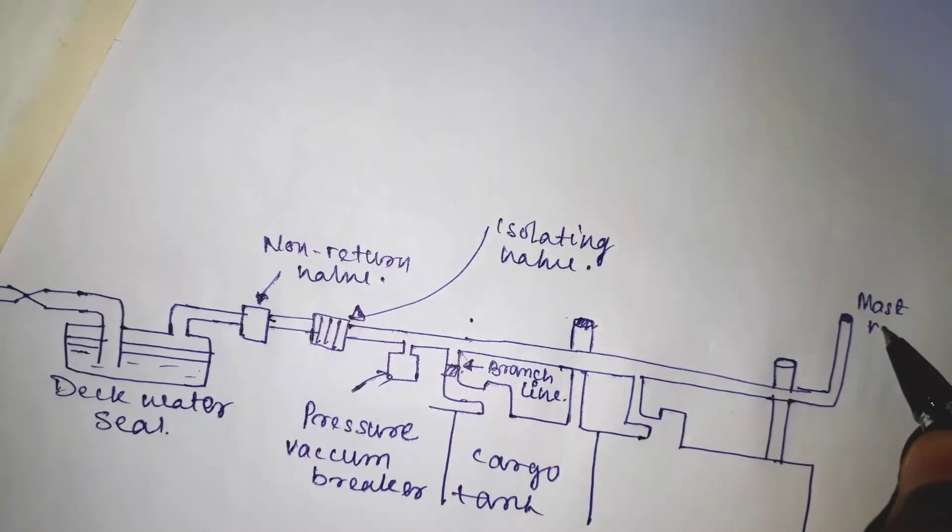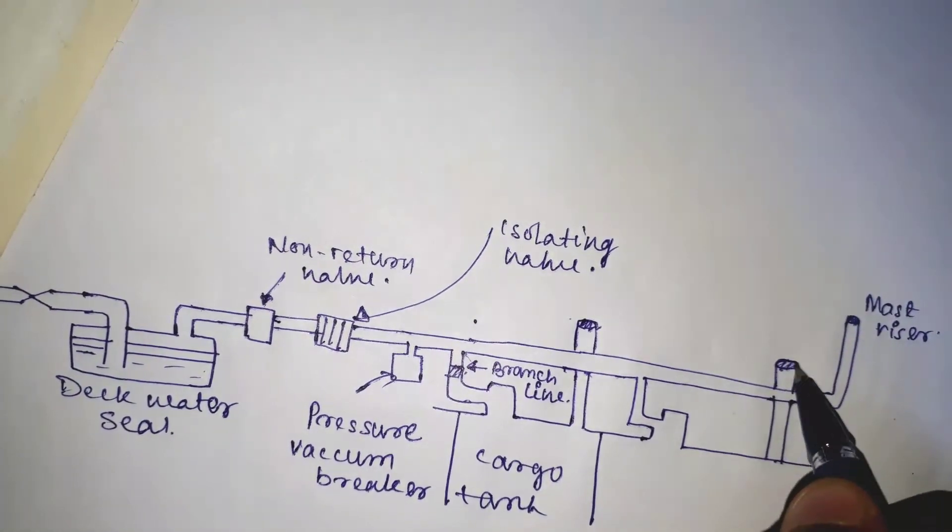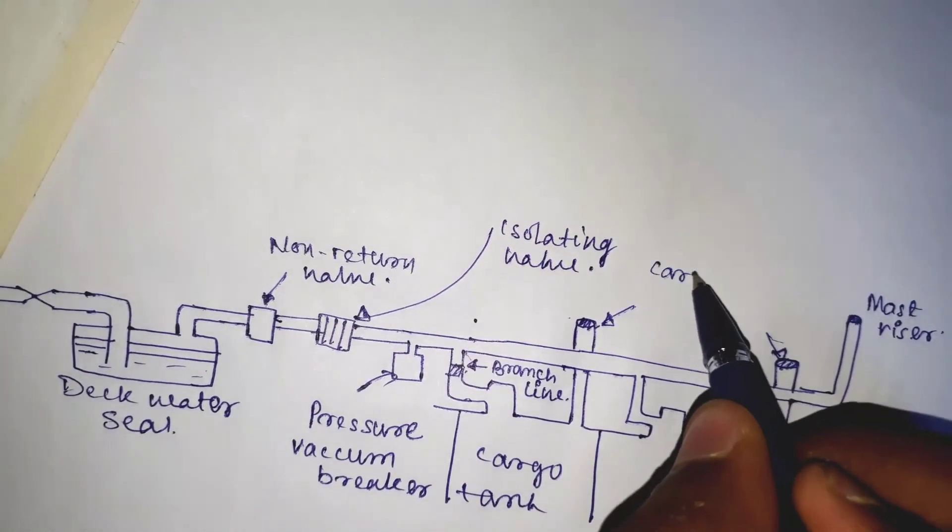The deck isolating valves. This isolates the deck main from the rest of the system when the plant is shut down. It also permits maintenance work to be carried out on the non-return valve.